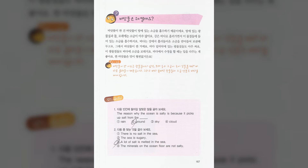When rivers run into the ocean, they pick up salt from these things. The ocean collects and keeps salt from all the rivers. That's why the ocean is salty. And the minerals that are on the ocean floor are also very salty. So they add salt to the ocean. You had better close your mouth when you swim in the ocean. Salty water tastes terrible.